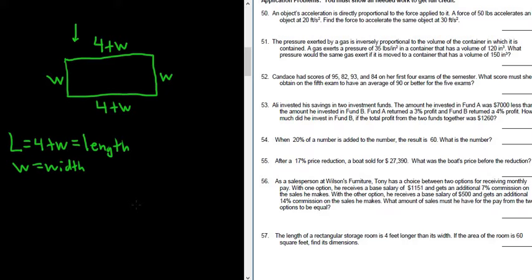So we're given the area. So to find the area, you just multiply, right? So you do length times width. So it'll be four plus W times W. So four plus W times W. This is the area. And we're told it's 60, so equals 60.